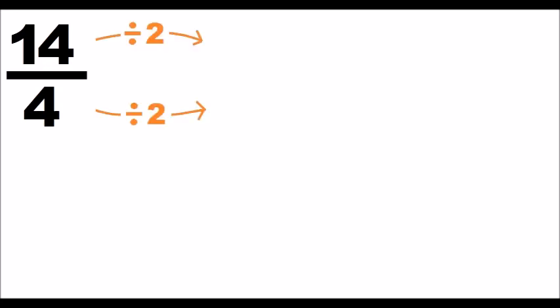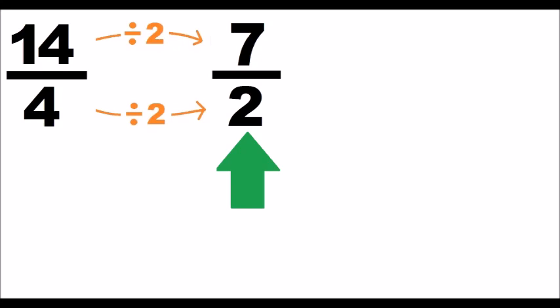Hello! First step, we simplify by 2 the initial fraction, then we get this fraction that we'll use to generate the mixed number.